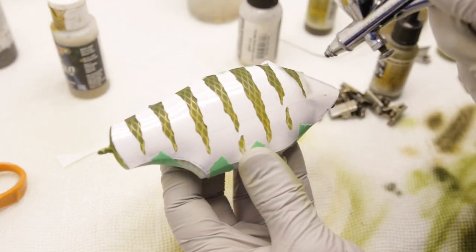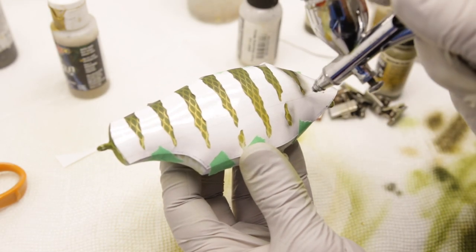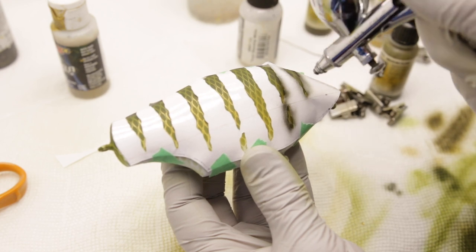All right, moving on, we're going to be painting the bar pattern that the bluegill has next. I'm just going to use black for that.